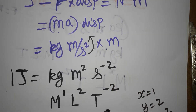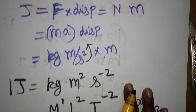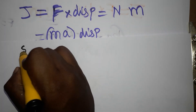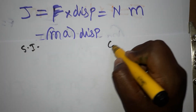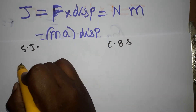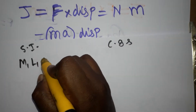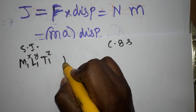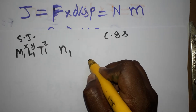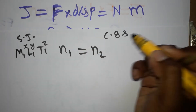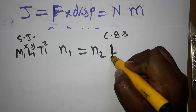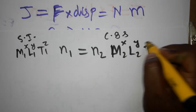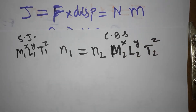Now we are going to use the dimensional analysis concept to find the relation between Joule and ERG. We take the SI side as n1·M1^x·L1^y·T1^z, which is n1 in terms of Joules, equal to n2·M2·L2·T2 with the same powers x, y, z.